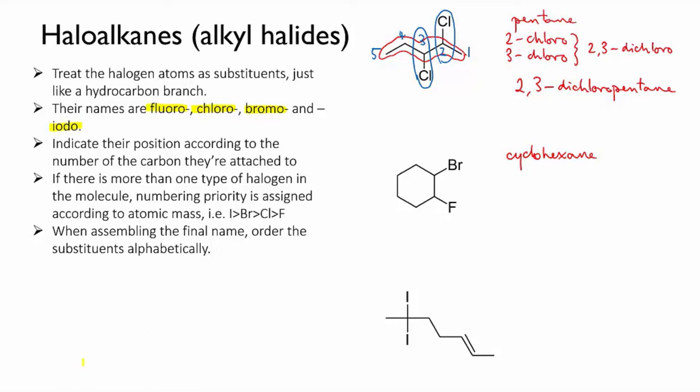Now when you number the carbons in a ring you can call any carbon you like number one. You're just guided by the need to make the numbers in the final name low. So we have two options.